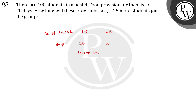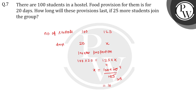This means it is inverse proportion. So x1 × y1 = x2 × y2. Here x will be: 100 multiplied by 20, divided by 125. Simplifying: 100 ÷ 25 = 4, so we get 4 × 4 = 16. Food will last 16 days.